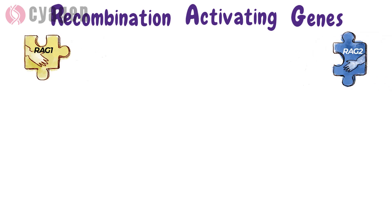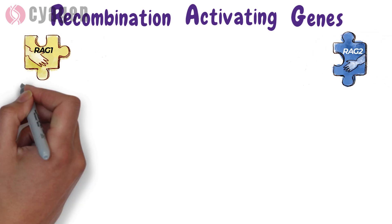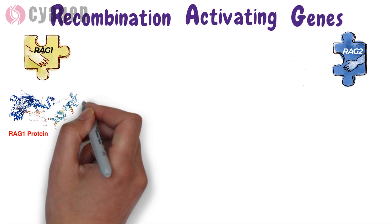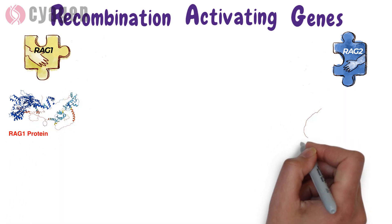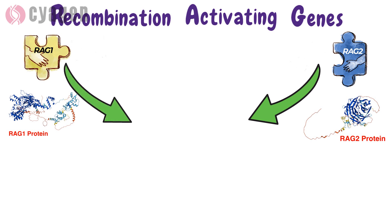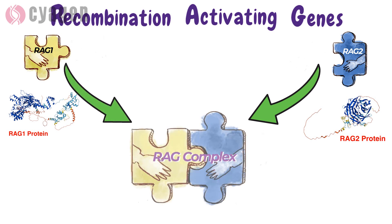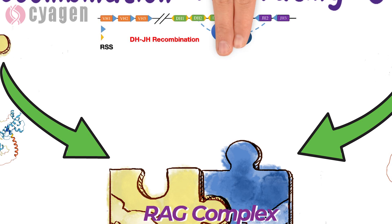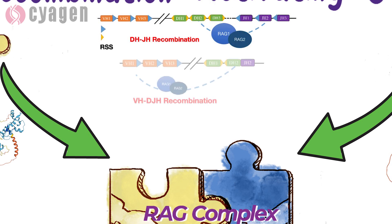Recombination activating genes RAG1 and RAG2 respectively encode the RAG1 and RAG2 recombinases. RAG1 and RAG2 are restrictively expressed in developing lymphocytes and are essential components of the adaptive immune system. These genes provide instruction for making a group of proteins called the RAG complex.